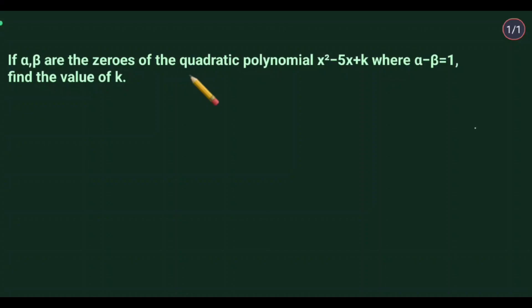Hello everyone, let's understand this question. If α and β are the zeros of the quadratic polynomial x² - 5x + k, where α - β = 1, find the value of k.